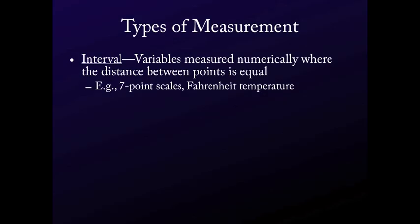These are the variables you want — what you want your dependent variables measured on. First is an interval scale: variables measured numerically where the distance between the points is equal. In the social sciences, for the most part, this is the highest level that variables reach. Interval is the level you should target. Examples include seven-point scales — we assume the distance between each point is equal — and Fahrenheit temperatures, where the difference between two and three degrees is the same as between three and four degrees.